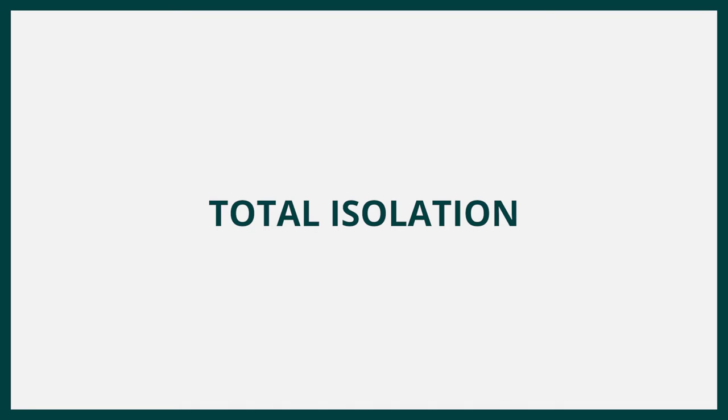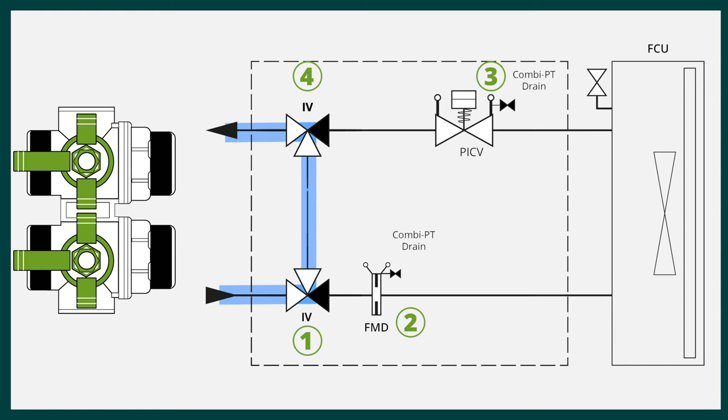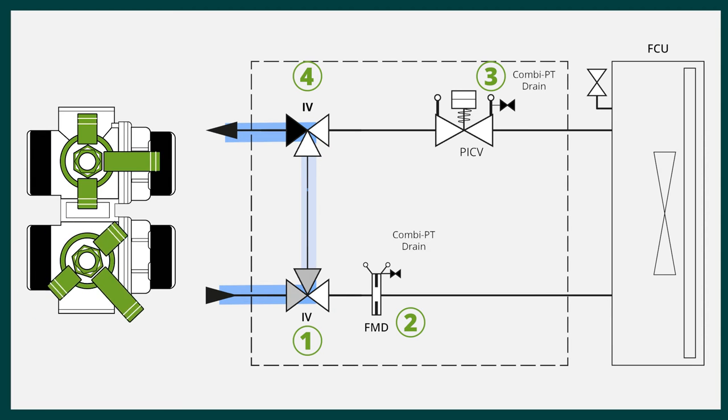Once the system flush is complete, isolate the system by turning the flushing bypass valve 4 clockwise into the isolation position with the long handle facing towards the fan coil unit. Then, turn the isolation valve 1 anticlockwise with the handle facing towards the fan coil unit for total isolation.